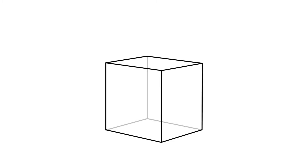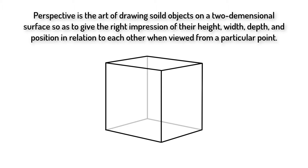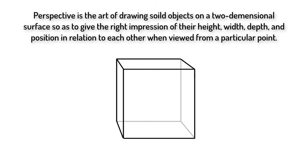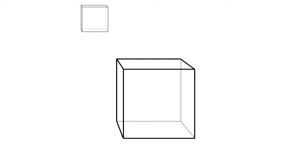Before we begin, we first need to understand what makes something look 3D. Perspective is the art of drawing solid objects on a two-dimensional surface so as to give the right impression of their height, width, depth, and position in relation to each other when viewed from a particular point. Things will appear to get smaller the further away they are from the viewer. Two boxes in reality can be the exact same size, but one can look a lot smaller simply because it's off in the distance. This is perspective — the 3D illusion we see every day.